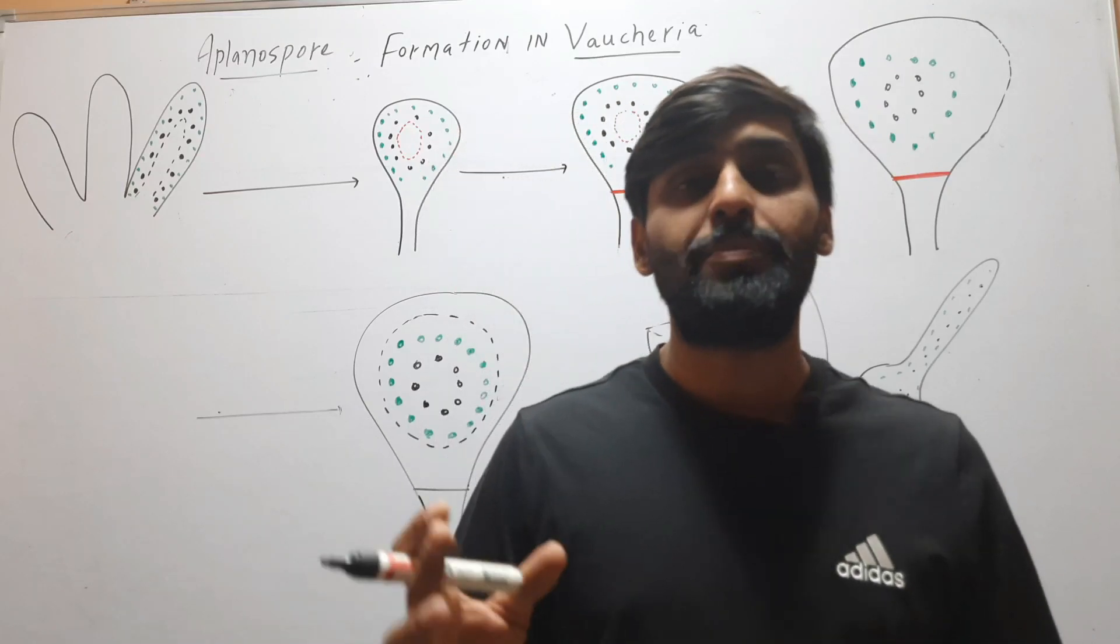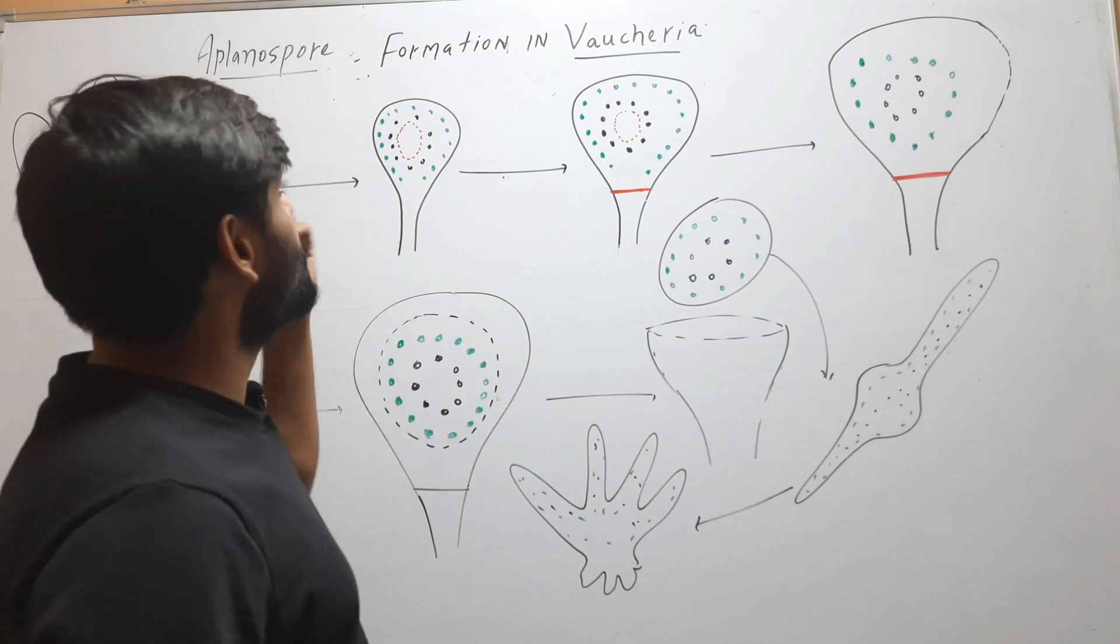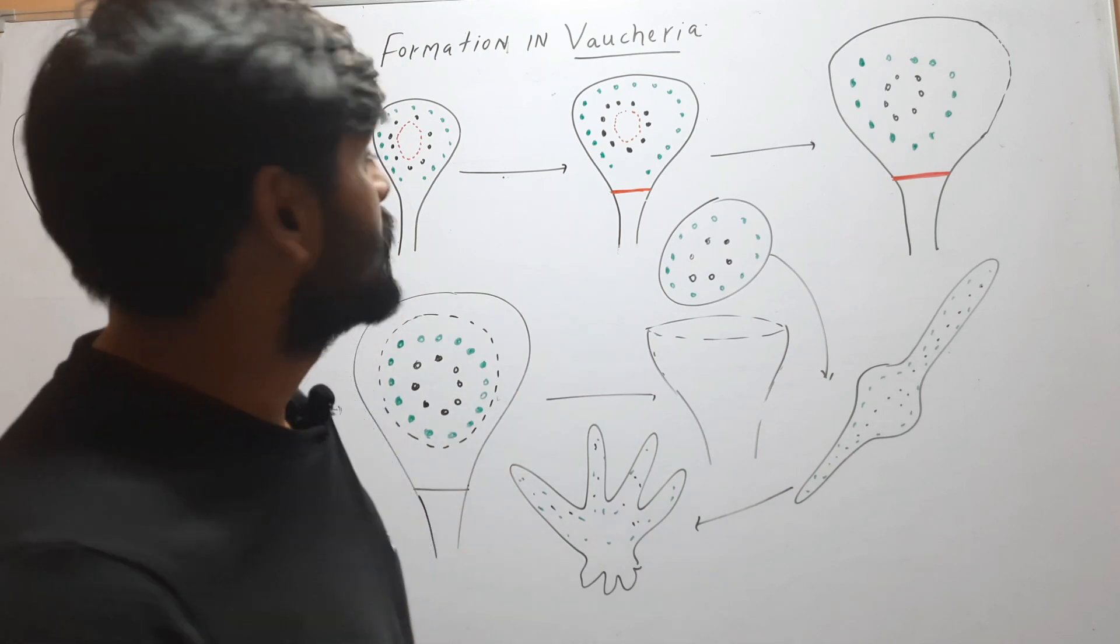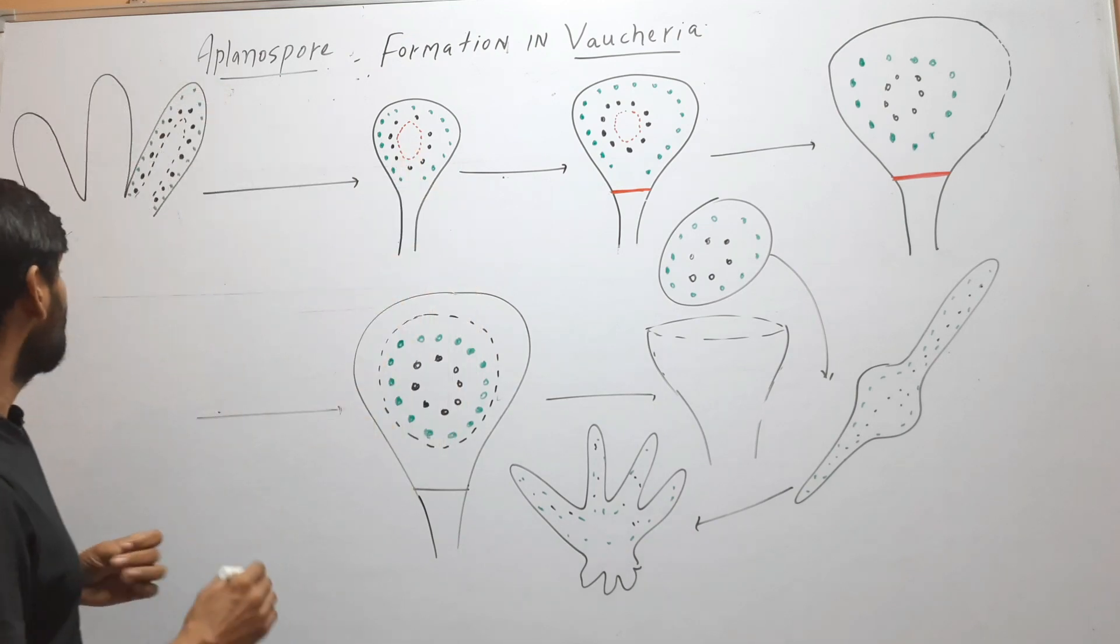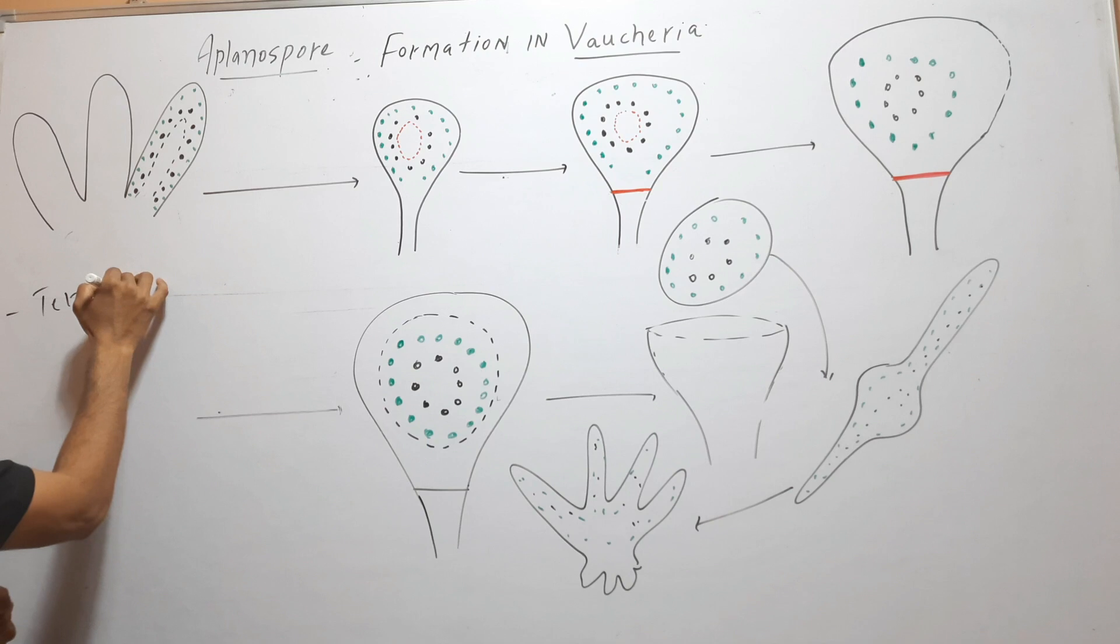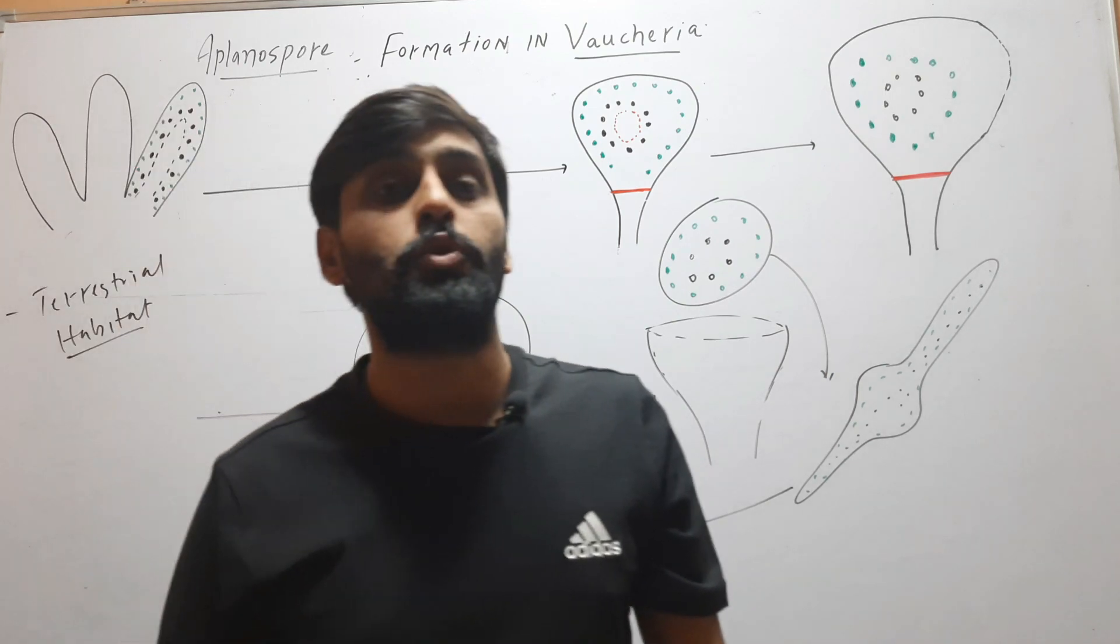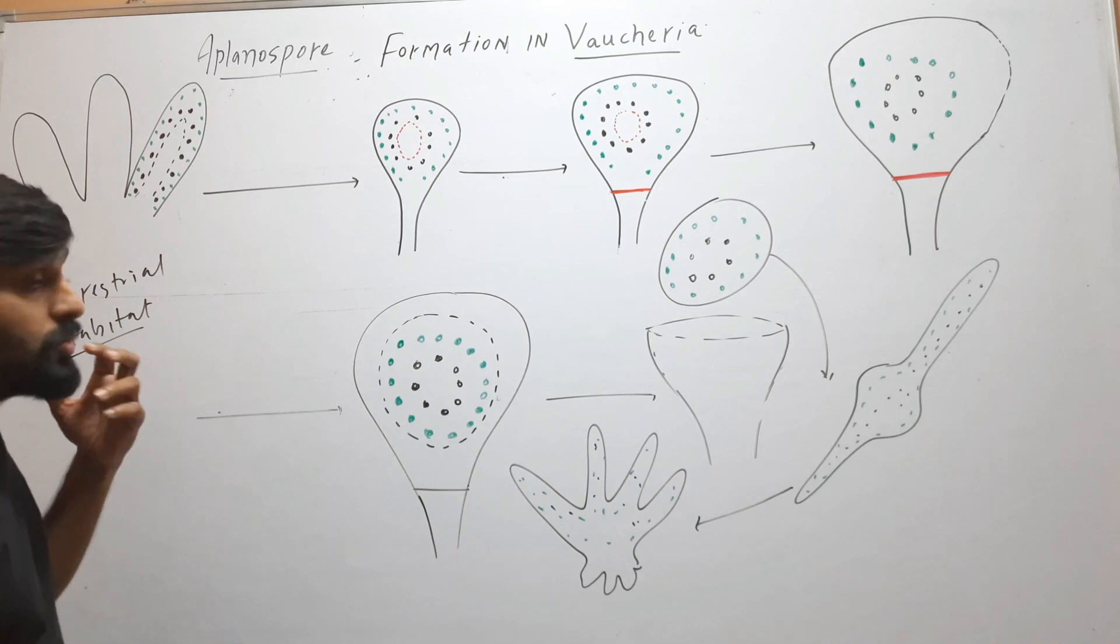Hello friends, welcome to my YouTube channel. In this video we will discuss aplanospore formation in Vaucheria. Aplanospores are formed in Vaucheria which have terrestrial habitat, and these aplanospores are formed under unfavorable conditions or you can say in water shortage or drought conditions.